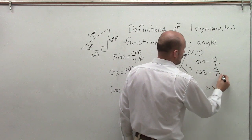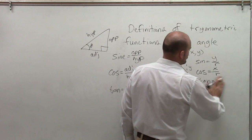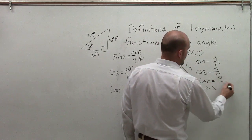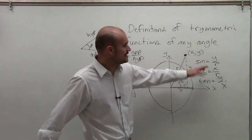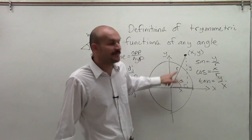Sine is now going to be y over r. Cosine is equal to x over r. And tangent is going to equal y over x, where x and y represent the coordinate points and r represents your radius.